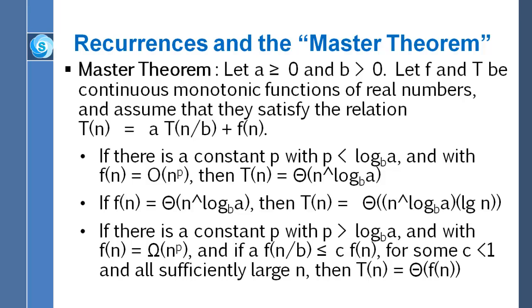The second bullet is somewhere, is something of the middle ground. And in that case, f of n is basically growing at the same rate of growth as n raised to the base b log of a. So in that case, you get the somewhat surprising formula that capital T of n is growing at the same rate as n raised to the base b log of a times the base 2 log of n.